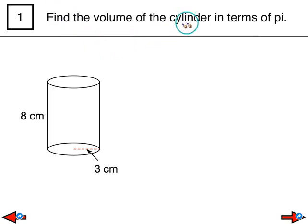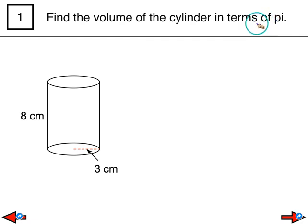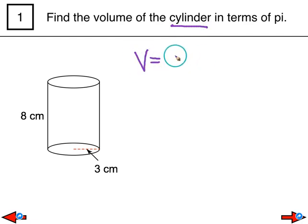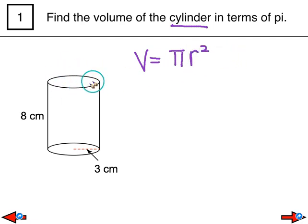This problem asks us to find the volume of the cylinder in terms of pi. We're also going to go ahead and solve by approximating it, because some homework problems will ask for both. The very first thing I want to do is write the formula for a cylinder. The volume of a cylinder is pi r squared — that's the area of a circle — and since a cylinder is a circle with height, we multiply by h for height.